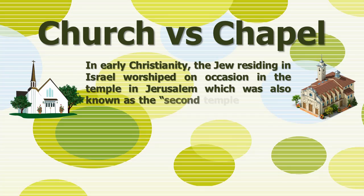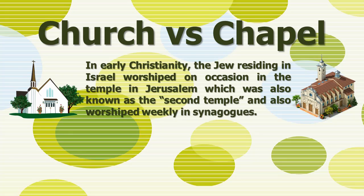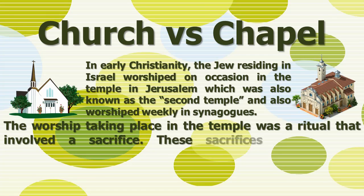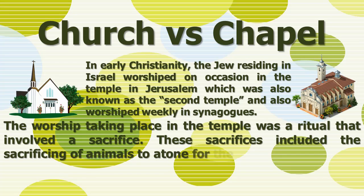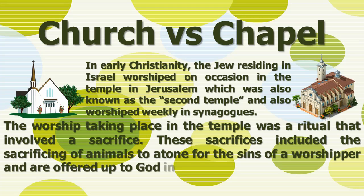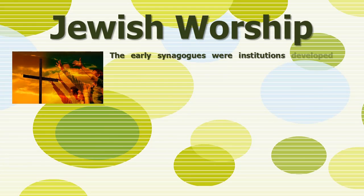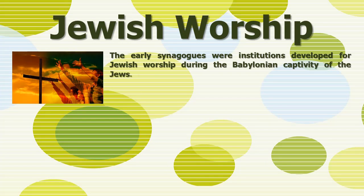The worship taking place in the temple was a ritual that involved sacrifice. These sacrifices included the sacrificing of animals to atone for the sins of a worshipper, and were offered up to God in Israel.